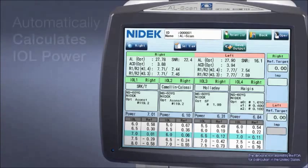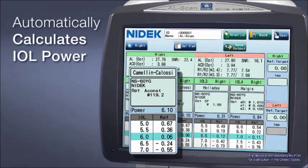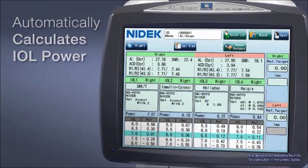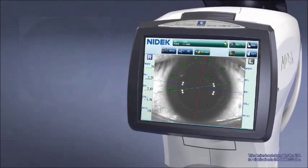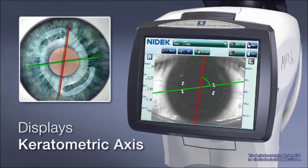The AL scan automatically calculates the optimal IOL power using its own measured data without the need for additional equipment. In addition, the keratometric axis is displayed on the eye image to assist with toric-IOL alignment.